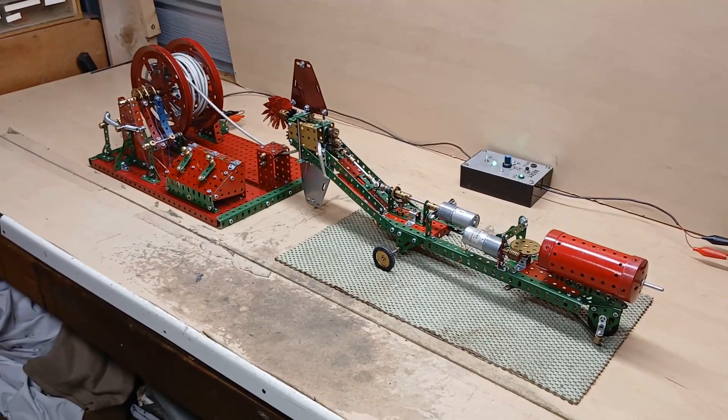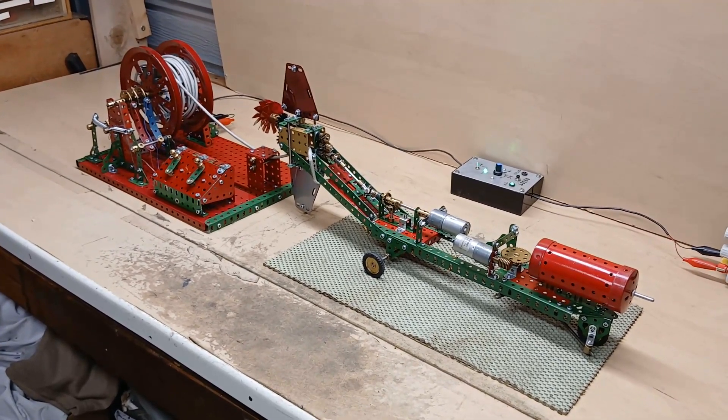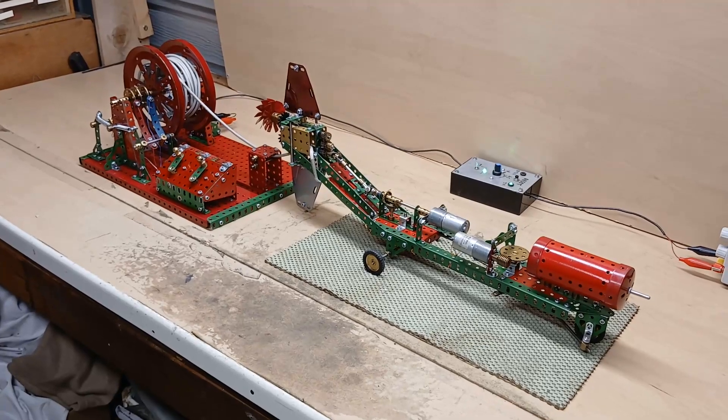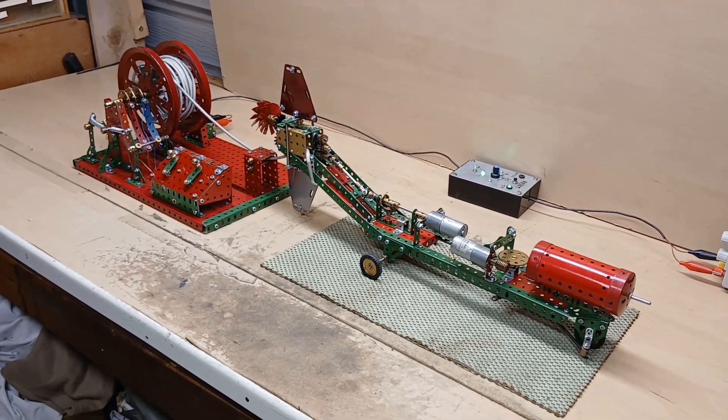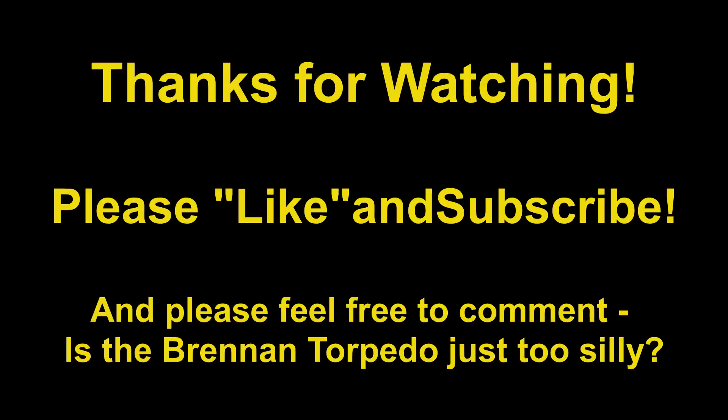That's it for the Spigley electric torpedo. Why they didn't do it this way is beyond my comprehension. It is so much simpler and so much more efficient. Well, that's it for my models of the Brennan and Spigley torpedoes. I'd love to hear in the comments what you think of all this. Thanks for watching.